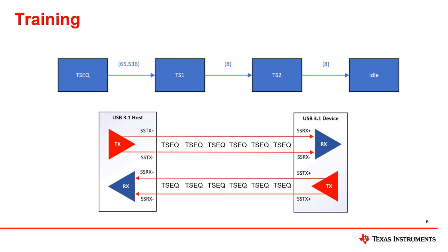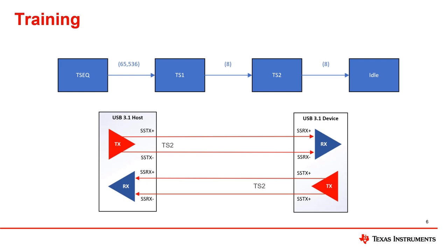Once 65,536 consecutive TSEQ sets have been received, the ports will send a new ordered set known as TS1. TS1 only needs to be received eight times before the next ordered set, TS2, is sent. We can think of TS2 as an acknowledgement that TS1 was received. When eight sets of TS2 are received, the USB 3 link transitions to an idle state just before U0 is entered. In this state, both ports will send idle symbols to each other, and after eight consecutive symbols are received, the link transitions to U0.